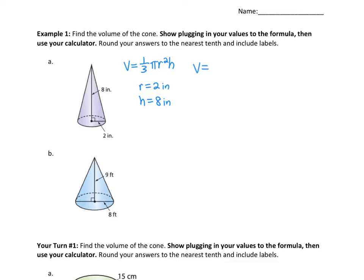We plug in: one-third times π, then in parentheses 2 squared times 8. Following order of operations, 2 squared is 4, and 4 times 8 is 32. So we have one-third × π × 32.